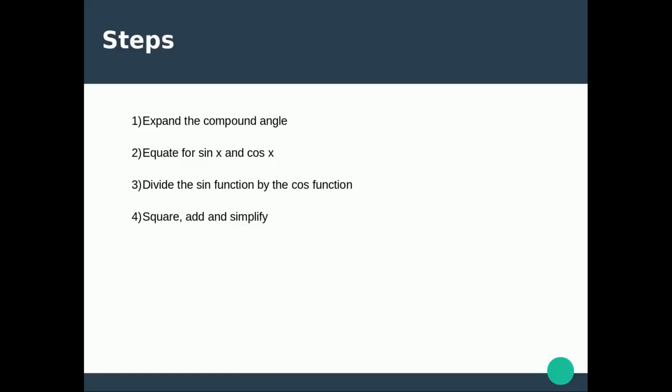Then we square each function, add the answers together, and then we simplify to get a value for R. Then we can simply rewrite our A sin x plus B cos x in the desired form.